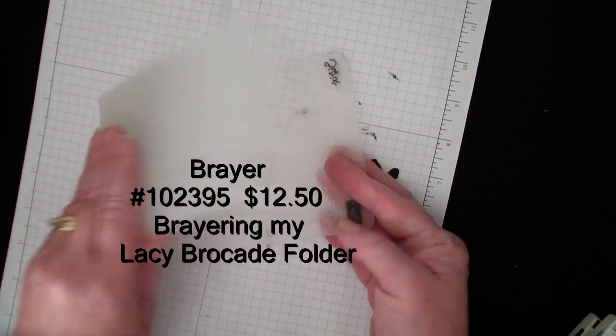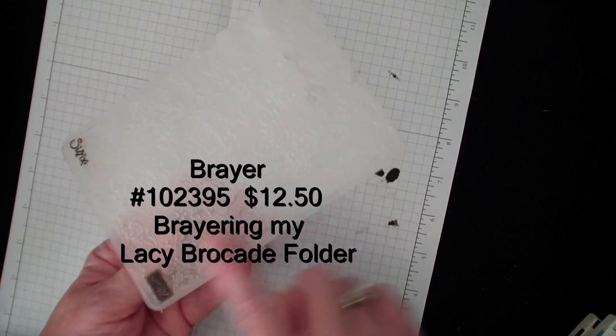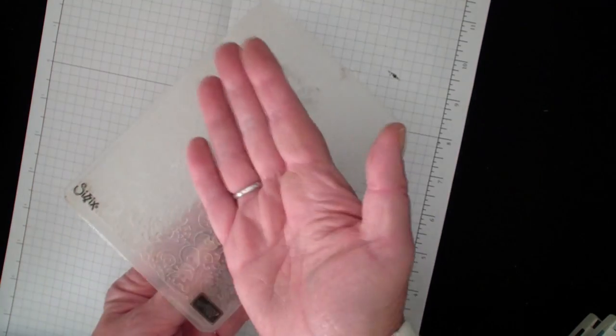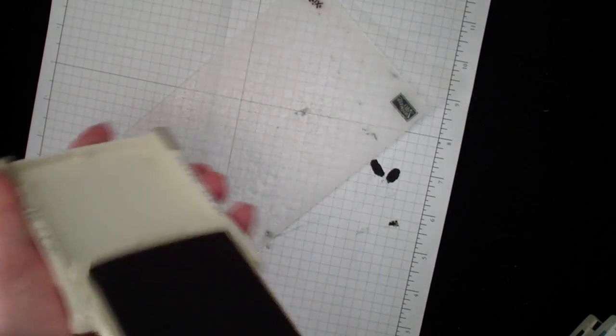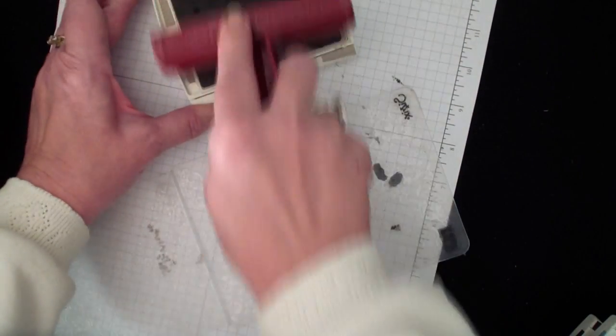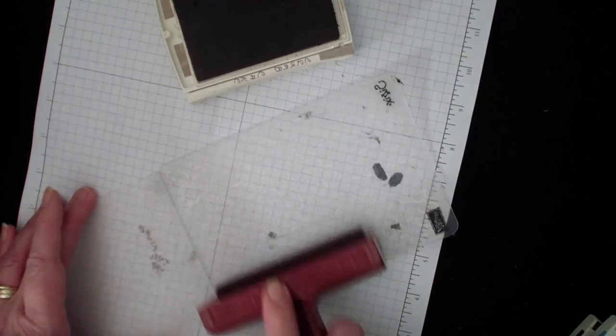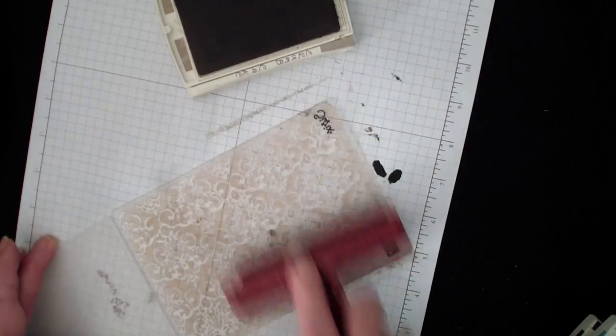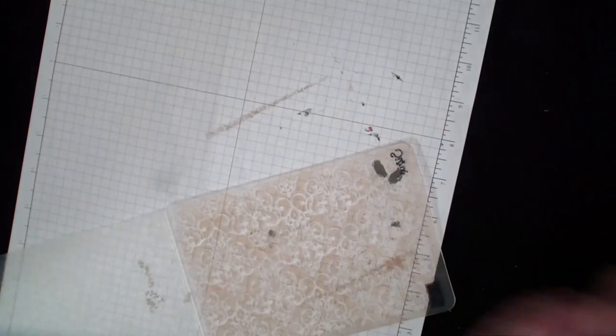First off, what we're going to do, I'm going to bring in a scrap piece of paper here, because I'm going to brayer my folder. Stampin' Up's folders where it says Sizzix and Stampin' Up, this is the side that will raise up. So what I'm going to do is I'm going to ink that side with my brayer. I could use the ink pad right on the folder, but I like the brayer because it gives it a more even color coverage. So I've brayed my folder.